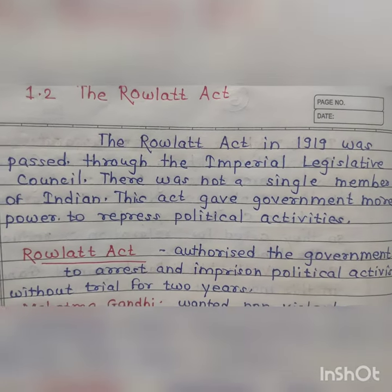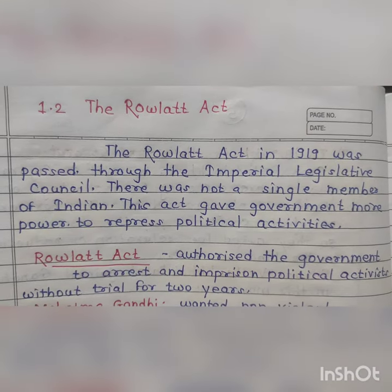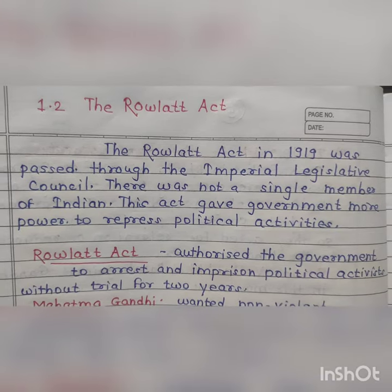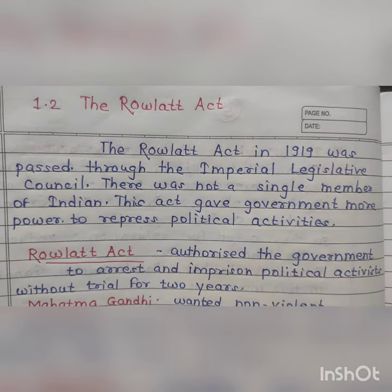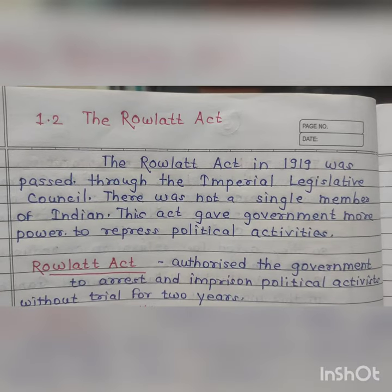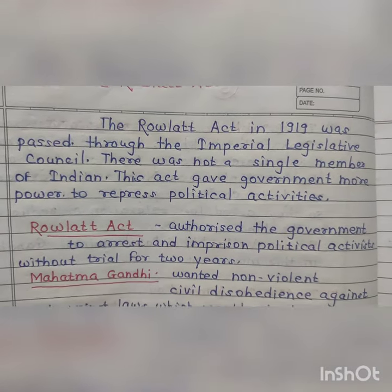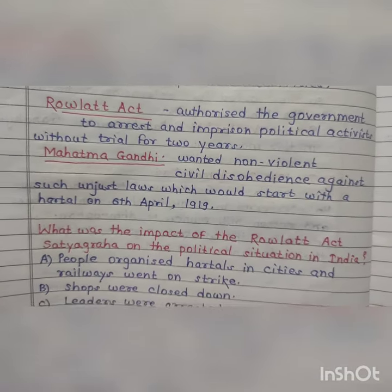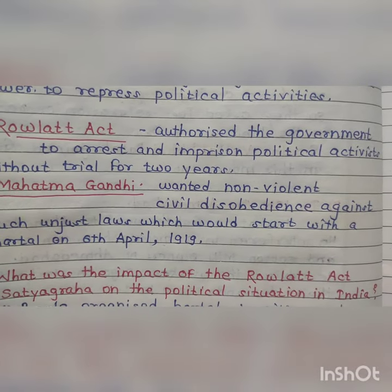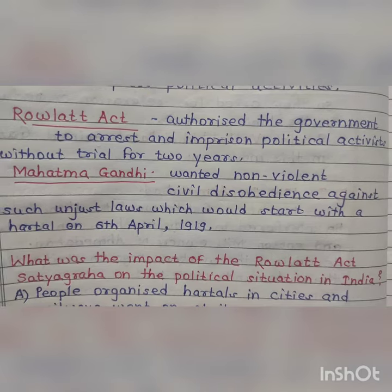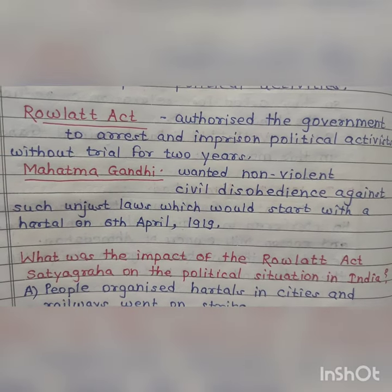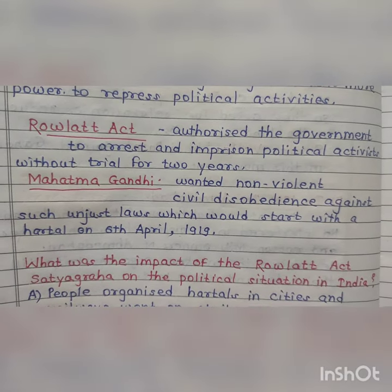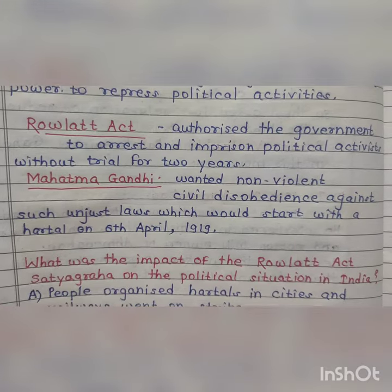The Rowlatt Act, what was it? In 1919, the Imperial Legislative Council passed this law with no single Indian member. The government got such powers that political activities were repressed. The Rowlatt Act authorized the government to arrest and imprison political activists without trial for two years.